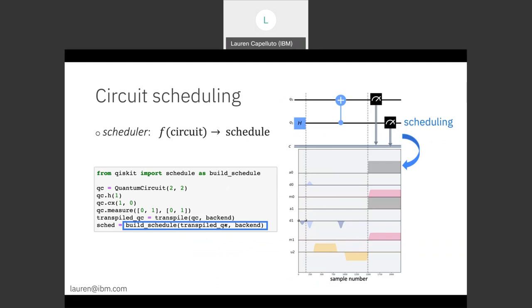Now a quick overview of circuit scheduling. So this means that I'm taking an input circuit and I'm going to lower it to a pulse schedule. This is really straightforward in Qiskit. So I import my scheduler method and then I build my quantum circuit as usual. I do have to transpile my input circuit.